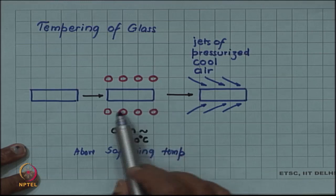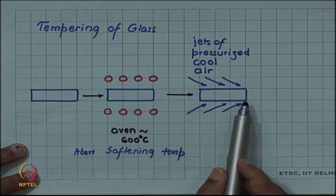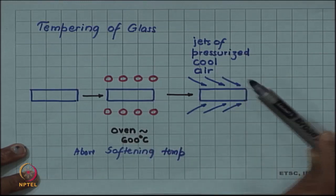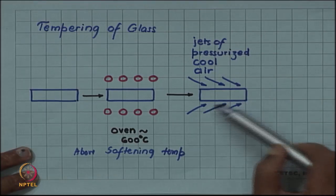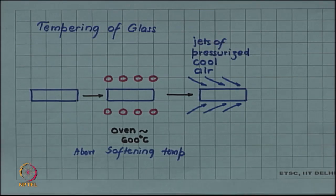And once the glass is heated, it is taken out of the furnace and is quickly cooled by jets of pressurized cool air playing on its surface. This step is called quenching.